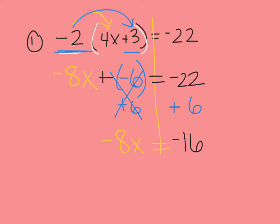Our final step is to divide by how many x's we have. In this case we have negative 8x, so we divide by negative 8. In doing so that leaves us with x all by itself. But if we do it on the left, we've got to do it on the right. Negative 16 divided by negative 8 is positive 2.